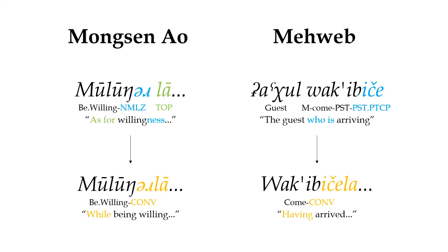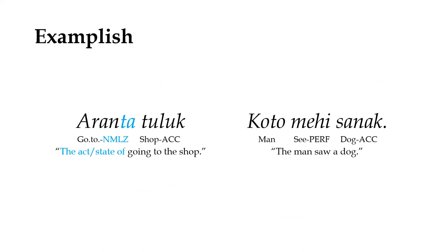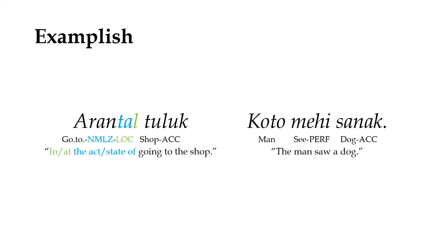The most commonly attested pathway to the development of converbs is for them to evolve from other non-finite verb forms, usually verbal nouns like gerunds or infinitives, or from verbal adjectives like participles. If we wanted to combine the phrases the man was going to the shop and the man saw a dog, one way we could do it would be to turn the first verb into a noun with the meaning of the act or state of going to the shop, and then using an adposition or even a case marker to convey a spatial relationship.